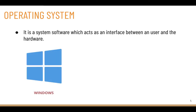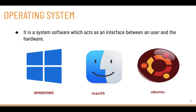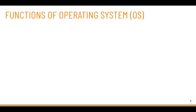Some examples of operating systems: the most popular is the Windows operating system, developed by Microsoft. Next is the Mac operating system, developed by Apple. One of the most popular open-source operating systems is Ubuntu.